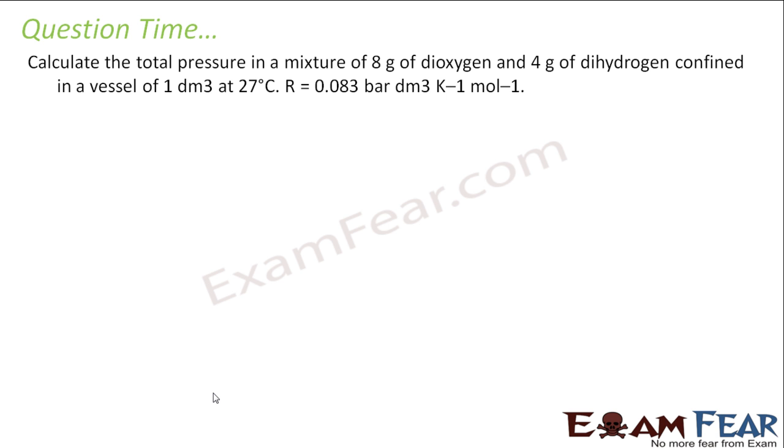You have to calculate the total pressure of a mixture where you have 8 gram of di-oxygen, 4 gram of di-hydrogen, confined in a vessel at 27 degrees Celsius. So this is also a very easy question actually. Pressure total will be what? Pressure of oxygen plus pressure of hydrogen. Because I have a vessel, I have oxygen and hydrogen. So in this case, my volume is 1 dm cube and temperature is 27 degrees Celsius.